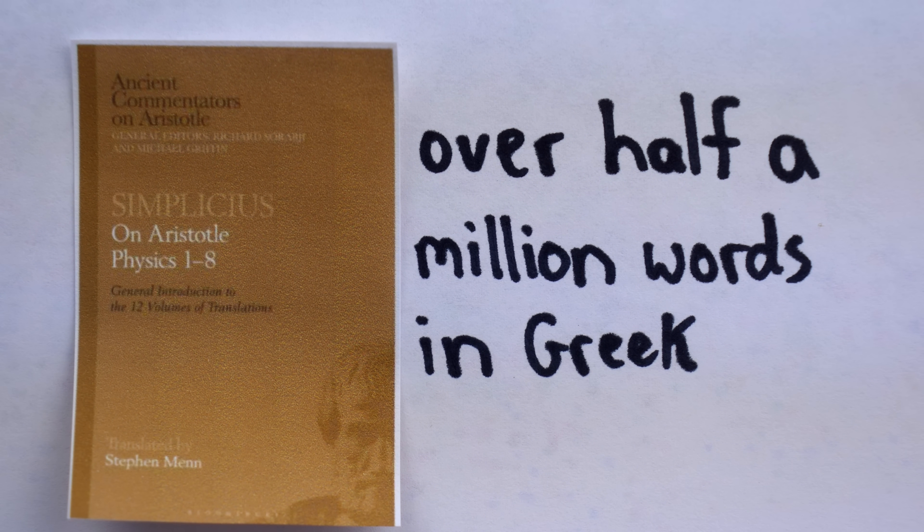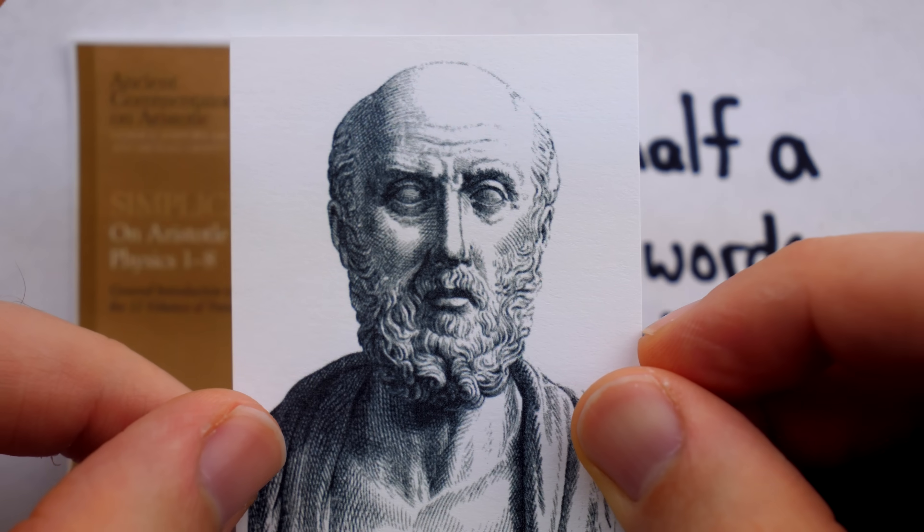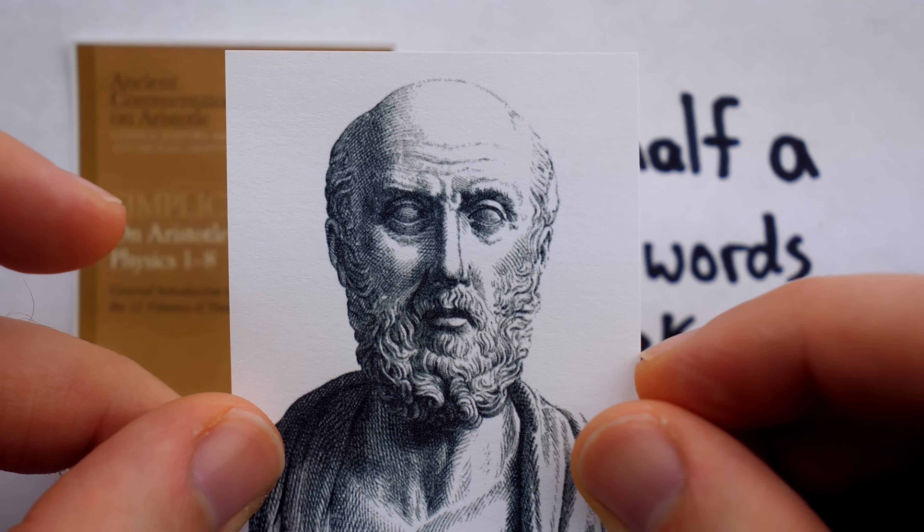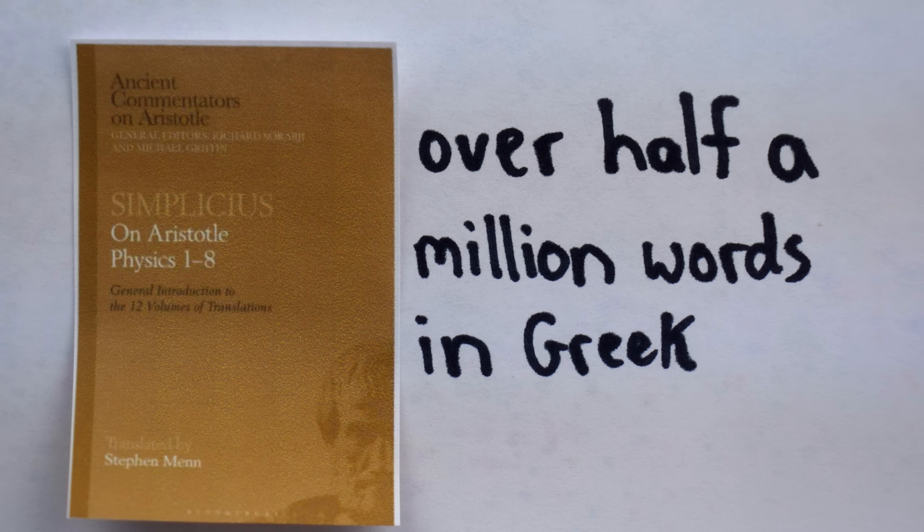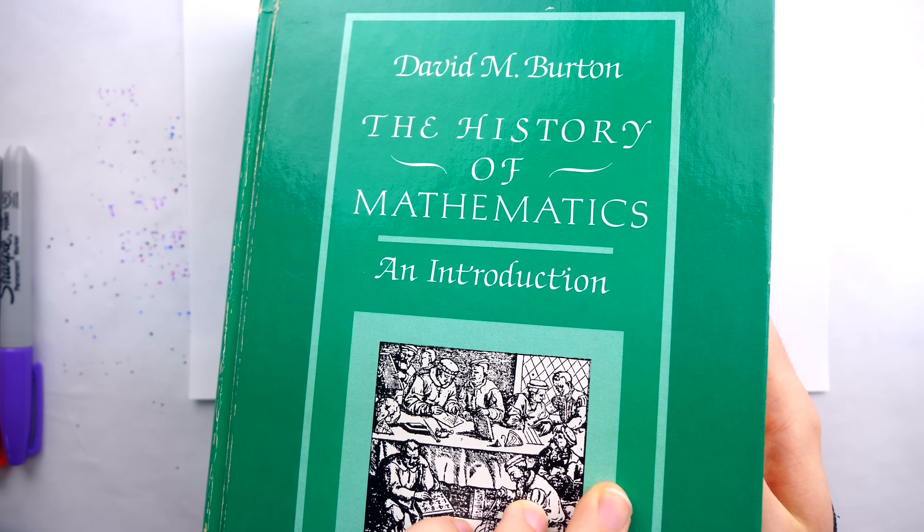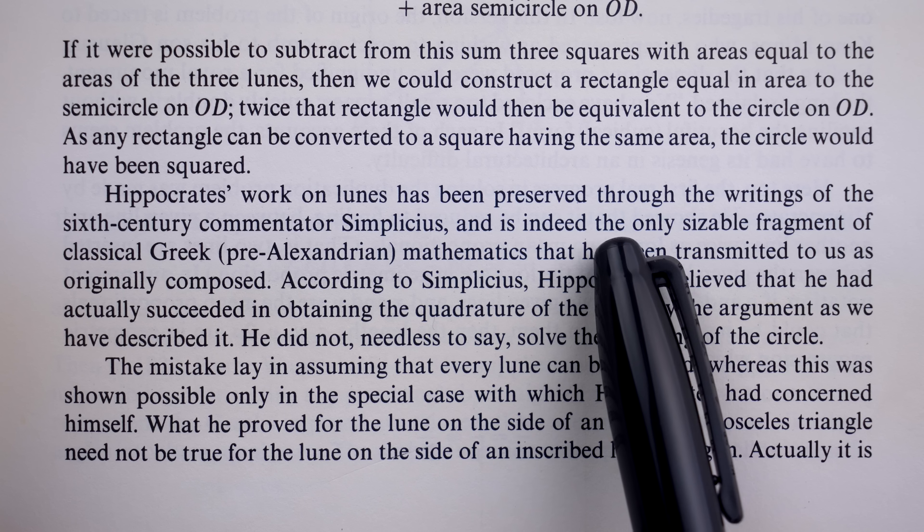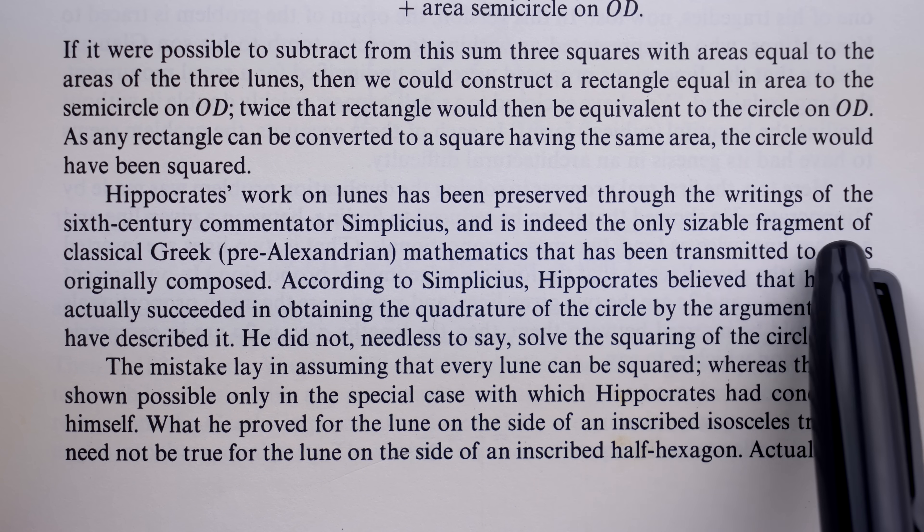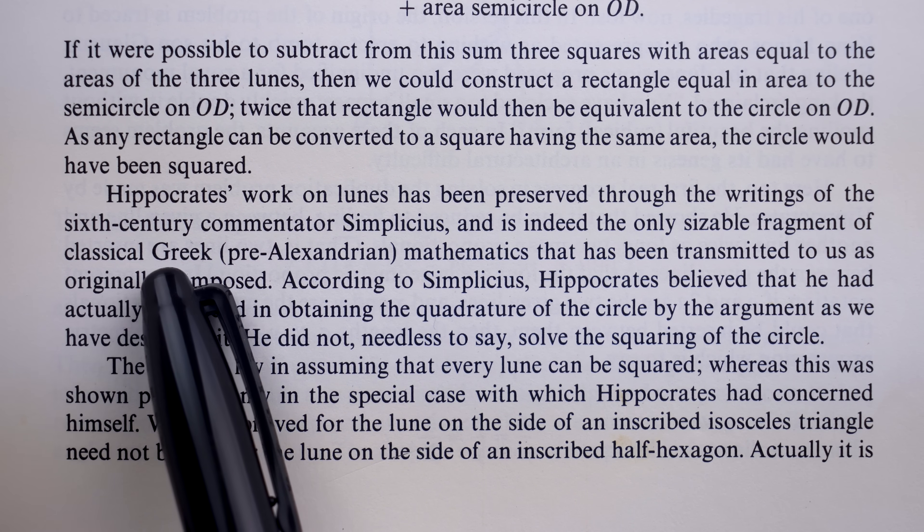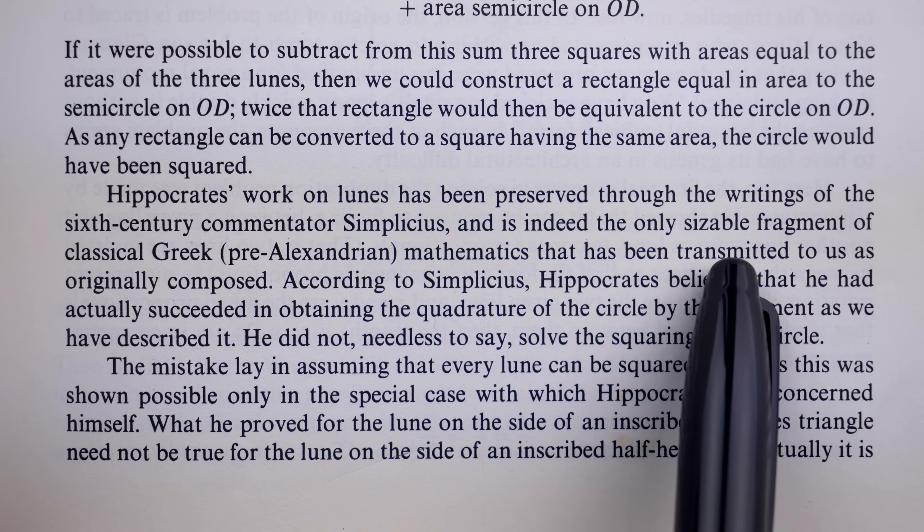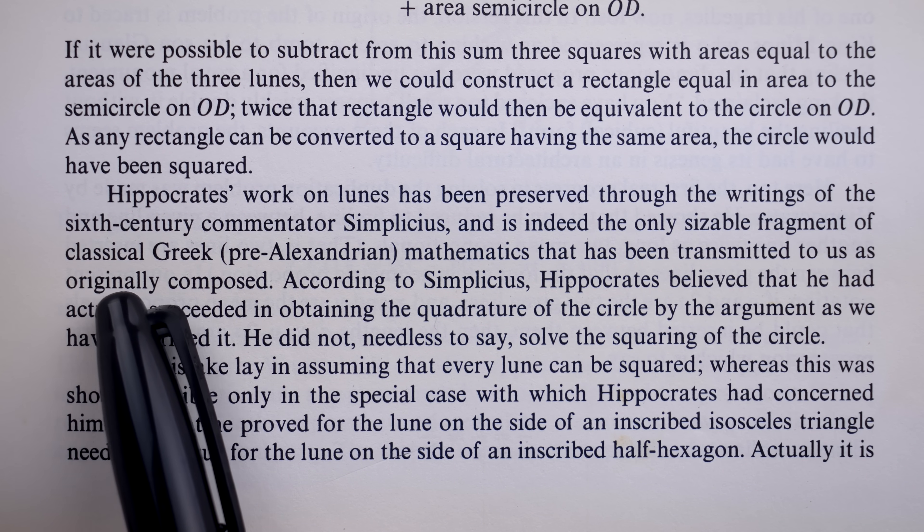In this massive work, Simplicius saw fit to include an incredible proof from Hippocrates' elements, which was contained in Eudemus' history of geometry. As David Burton describes it in his History of Mathematics, it is the only sizable fragment of classical Greek mathematics that has been transmitted to us as originally composed.